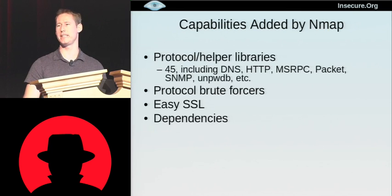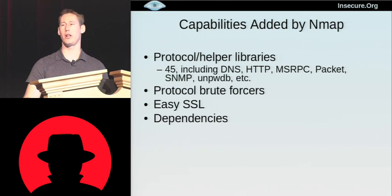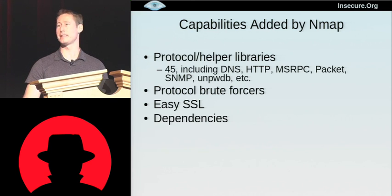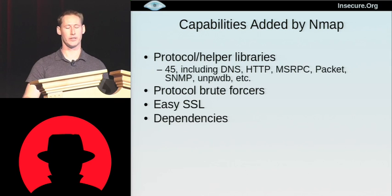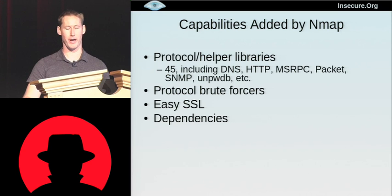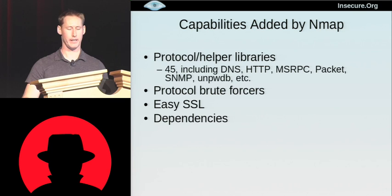Now we'll look at what NSE adds to Lua to make it more effective for network scanning. We have protocol and helper libraries. The idea is to make Lua easy to use so you can do things like make MSRPC queries and HTTP GET requests without getting bogged down in all the protocol details. We have libraries for DNS, HTTP, MSRPC, a packet library for constructing raw packets, SNMP, and basically a bunch of tools optimized for writing network discovery scripts.